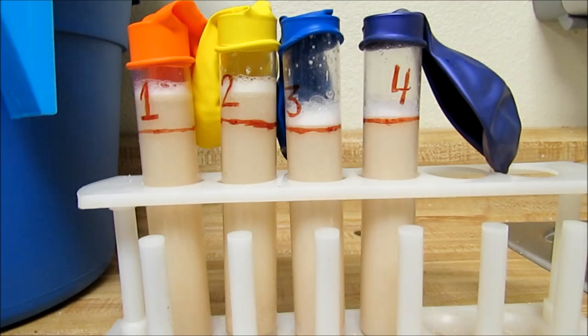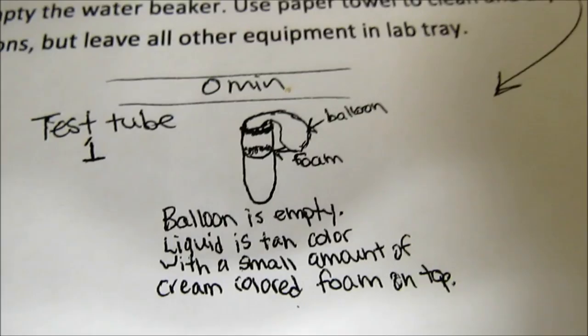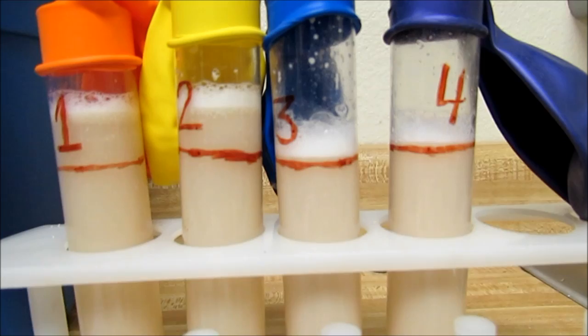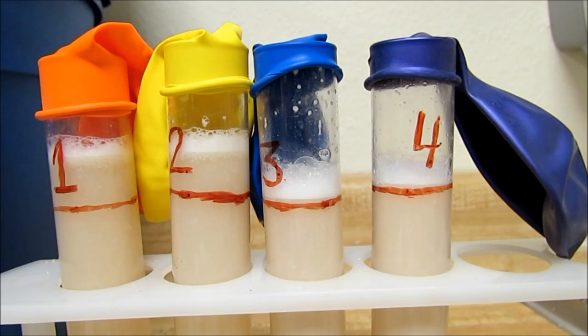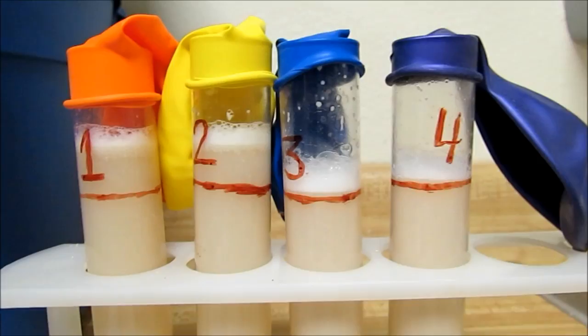So this would be the observation that you're going to want to write down for your zero-minute observation. In your observations, do be sure to include a drawing as well as a description for each test tube. So again, looking closely, there you can see something that you could observe for each test tube.